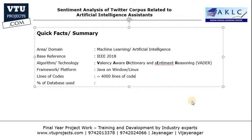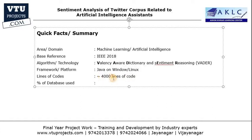On average, any final year project is completed within 1000 to 1500 lines of code, but we will be writing around 4000 lines of code in this particular project. This is not because the project will be complicated, but because of the number of modules and features we are going to add. Each and every line of code will be easy to understand. The percentage of the database used will be at most 6%.